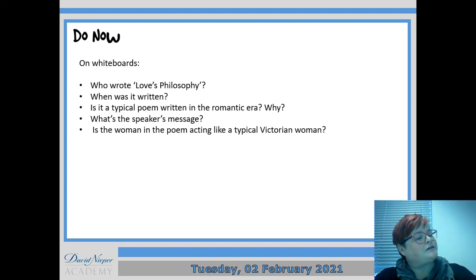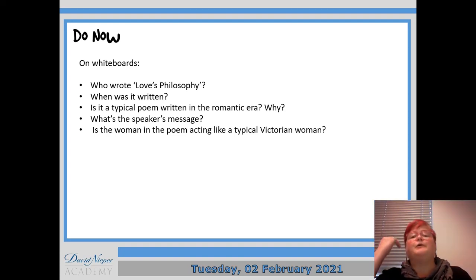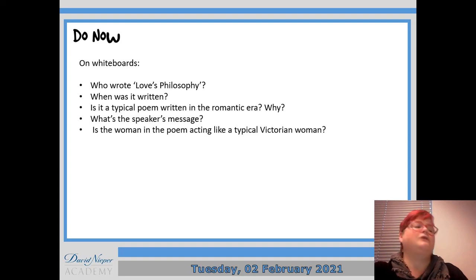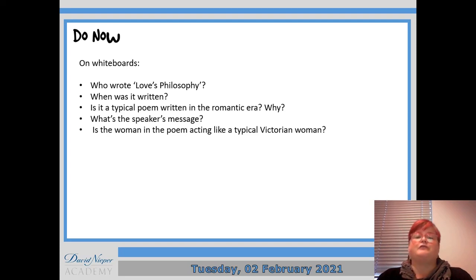I don't have my anthology with me, so I can't tell when it was written. It was written by Percy Shelley in 1820. Yes, it's a fairly typical poem of the Romantic era because it's full of nature. The speaker's message is that nature mixes together all the time, so therefore they should too and the girl should give him a kiss. Does the woman in the poem act like a typical Victorian woman? Well, yes, because she says no — she's sticking to no sex or kissing before marriage.